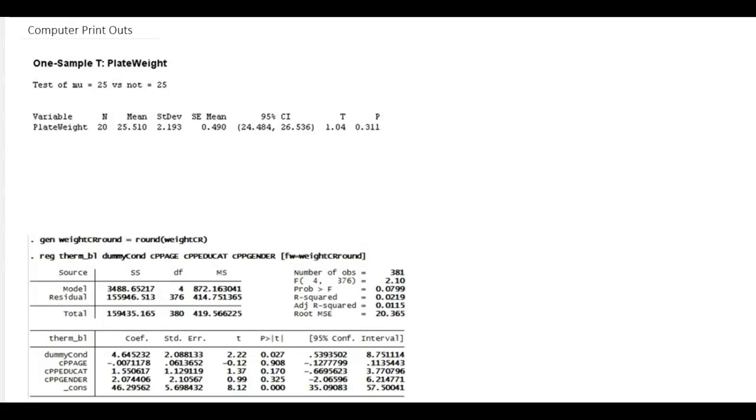Computer printouts are always going to look a little different, but these examples hopefully will help you see what you need to pick out. This right here tells us that we're doing a one sample t. And this right here tells you that your H₀ is that the μ is 25 and the Hₐ is that the μ is not 25. So that lets you know that it's a two-tailed test.